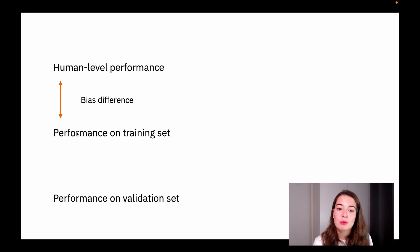On the other hand, if your performance on the training set is good, but not on the validation set, then we call this the variance difference. And again, as we talked about, if you're fitting well on the training set and not on validation set, that means you're overfitting.